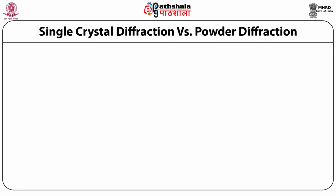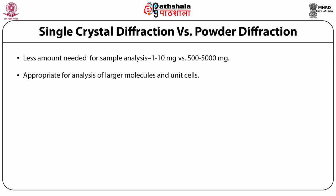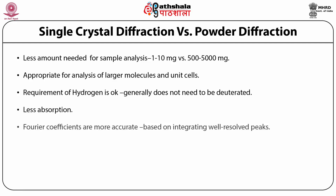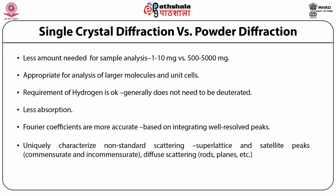In a comparison between single crystal diffraction and powder diffraction: single crystal requires less sample — 1 to 10 milligrams versus 500 to 5000 milligrams for powder. Single crystal is appropriate for analysis of larger molecules and unit cells. In single crystal diffraction, Fourier coefficients are more accurate, while in powder they are based on integrated well-resolved peaks. Single crystal uniquely characterizes non-standard scattering, while powder handles superlattices, satellite peaks, commensurate and incommensurate structures, diffuse scattering, rods, and planes.